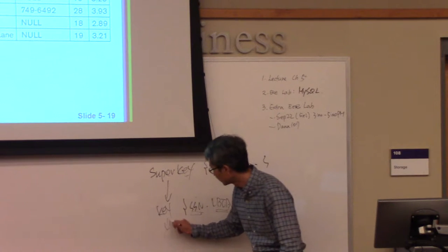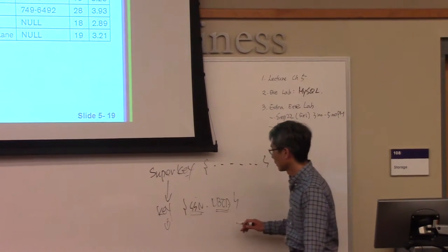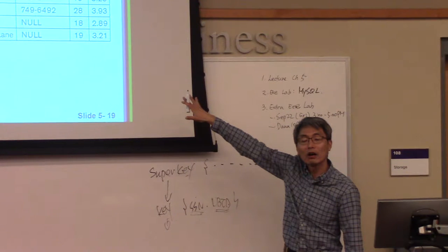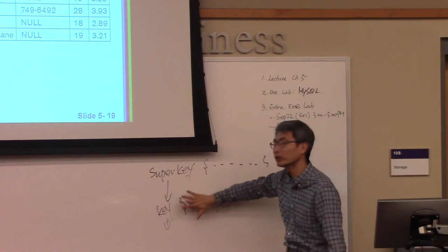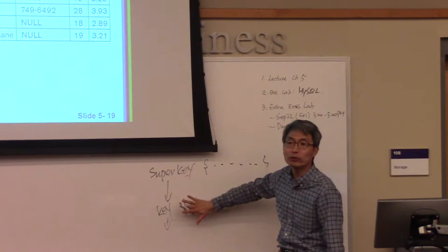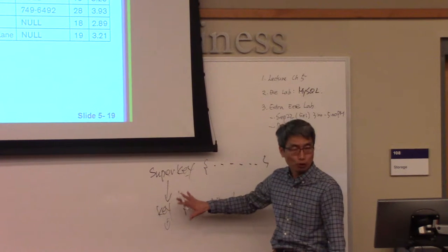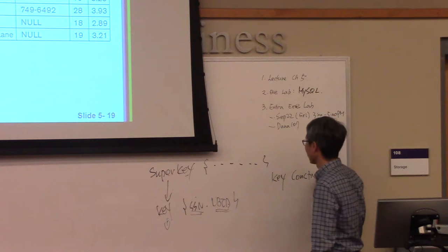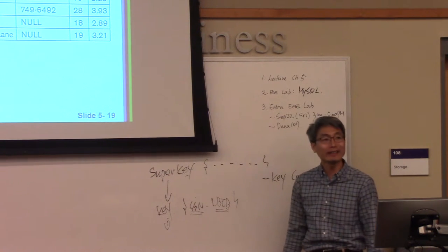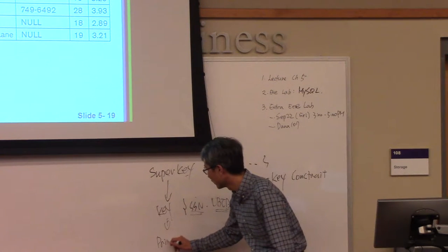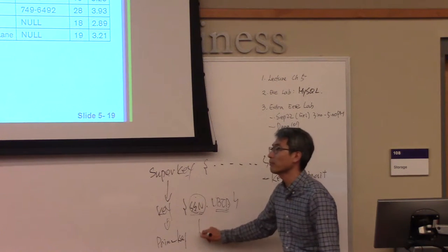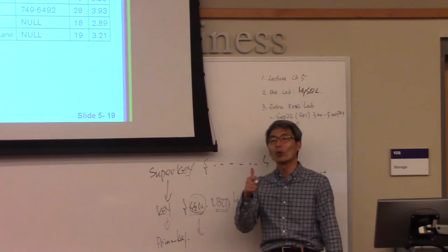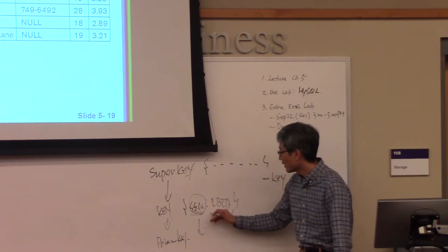Is it possible to have a relation without a key? According to the relational model definition, it is not possible — you must have a key. That is the key constraint of the relational model. Sometimes there can be multiple keys. At that time, you need to select one of them as the primary key. How many primary keys? Always one — no matter how many keys you can find.